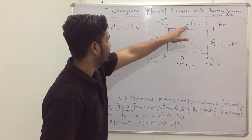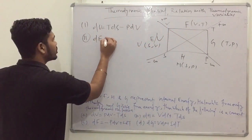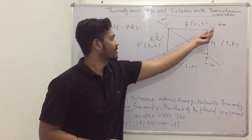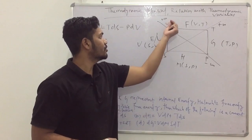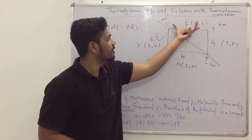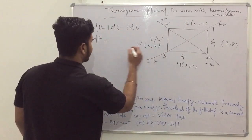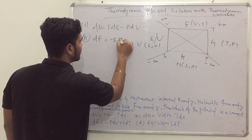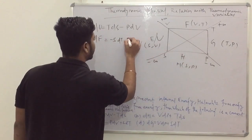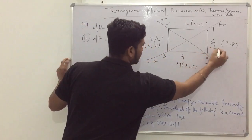For Helmholtz free energy F, it is a function of V and T. Both variables go from plus infinity to minus infinity, so both terms are negative. Therefore: dF = −SdT − PdV.